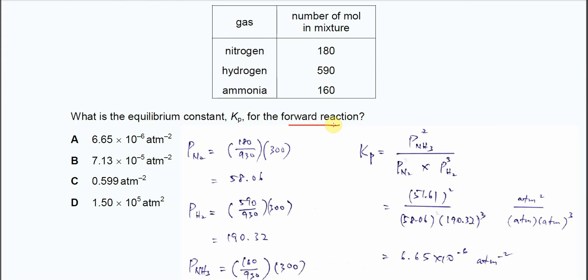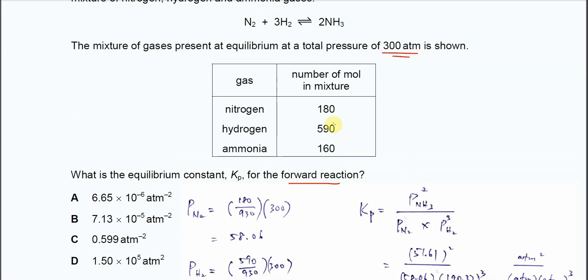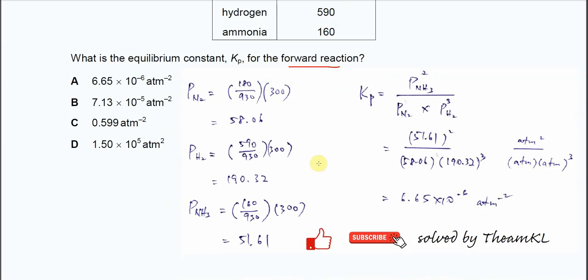You need to calculate the partial pressure based on Dalton's law. This means you need to calculate the partial pressure for the reactants and product using the mole fraction and the total pressure.